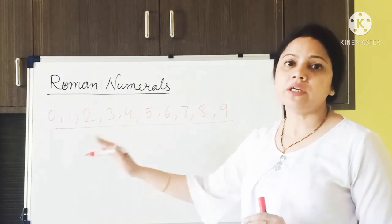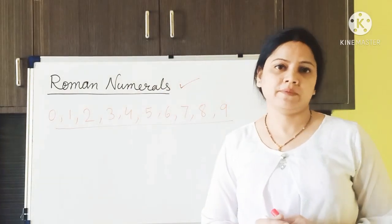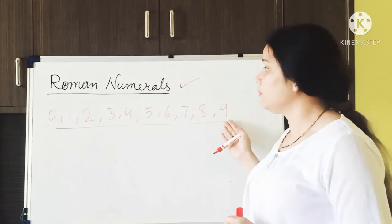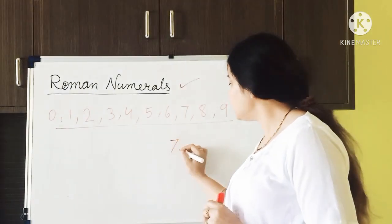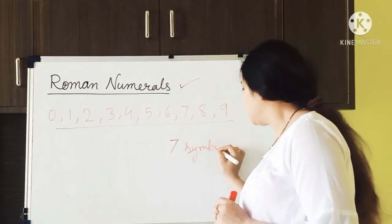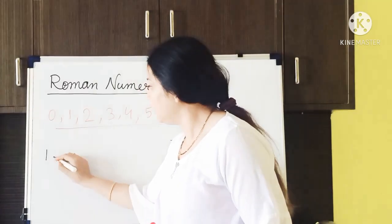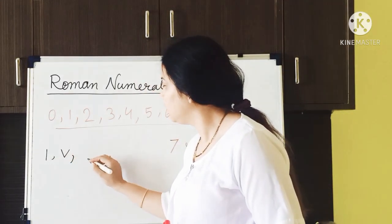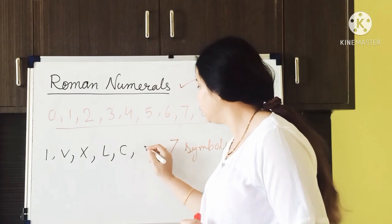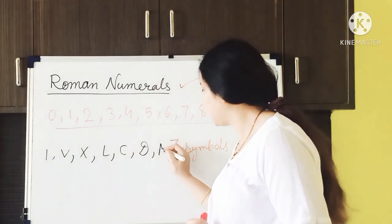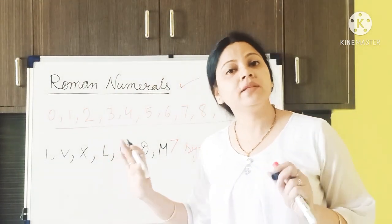Till now we have studied Indian Arabic numbers, but today we will learn about Roman numerals. Unlike the international number system that uses 10 digits to form any number, Roman numerals use only 7 symbols to form any number. Those symbols are I, V, X, L, C, D, and M.